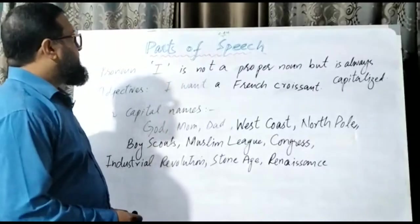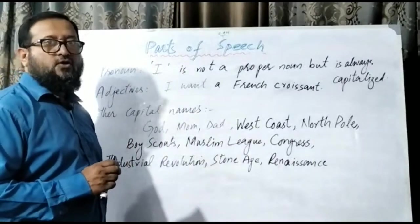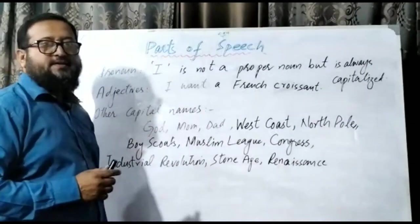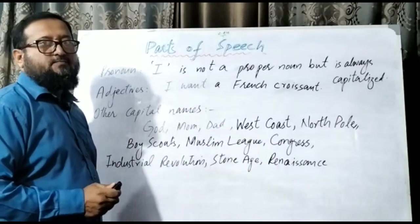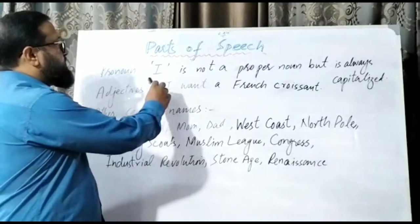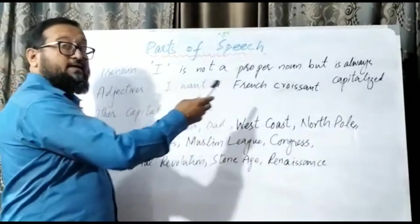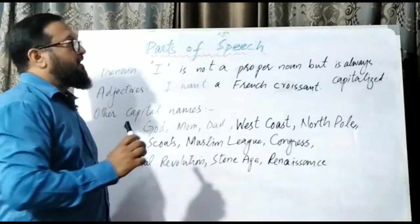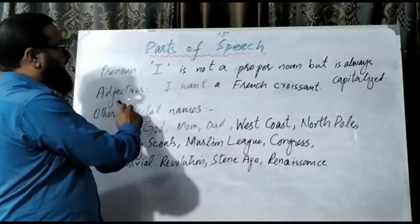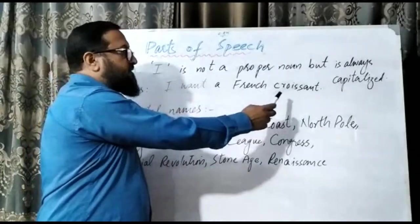There are particular places where you have to use capital letters, but not for all words. For example, 'I' — when you are referring to yourself, whether it is at the beginning, in the middle, or at the end, you have to use it as capital. However, I is not a proper noun — it is a pronoun, but it is always capitalized.